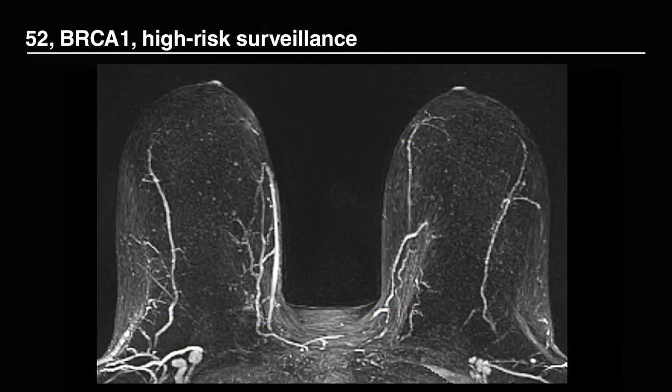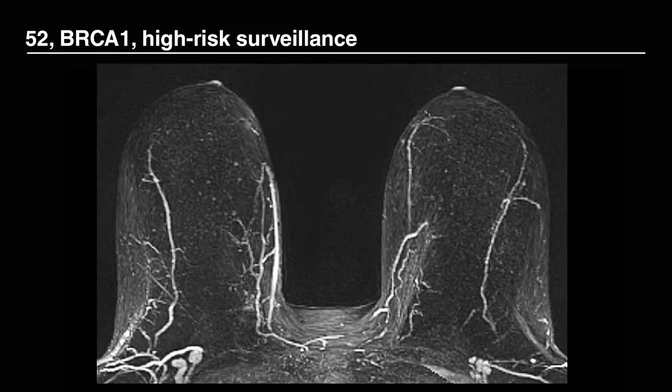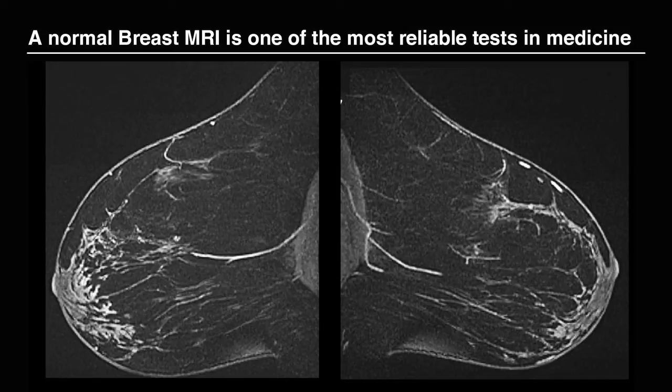Now we've seen that MR is capable of detecting even small breast cancers in patients at high risk. But the other side — which is very important in terms of quality of life — is when we get a normal exam. This is a woman, 52 years old, a known breast cancer gene carrier undergoing high-risk surveillance. This is a normal breast MRI. You see there are no bright spots, there's no color — just normal blood vessels in a normal breast. A normal breast MRI, even in a situation of very high risk, is one of the most reliable tests that we have in medicine. It approaches 100% — it's 99% what we call negative predictive value. We will typically see the woman in a year; she'll get a mammogram at six months. The exams are staggered by six months. What this means for her is peace of mind.